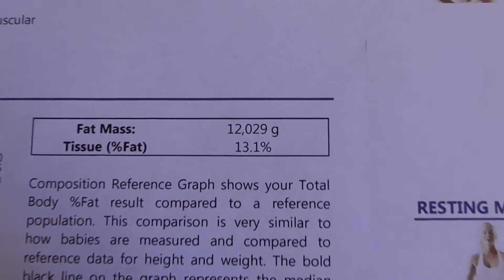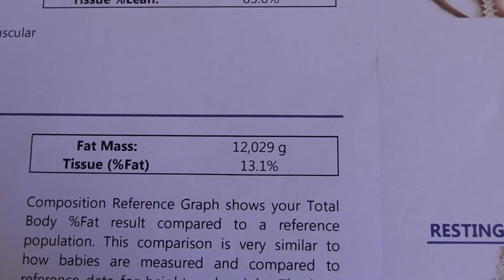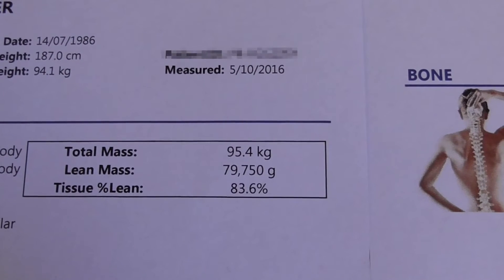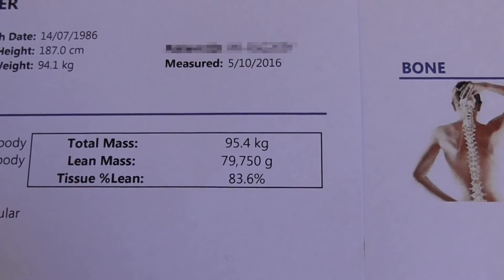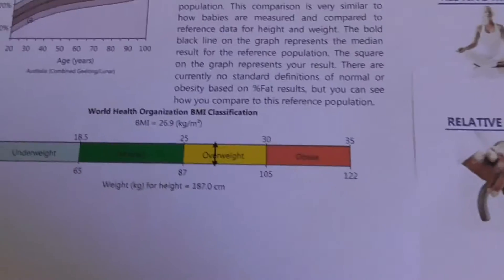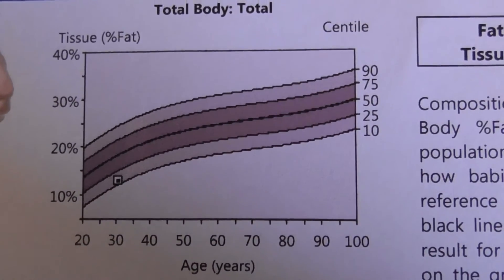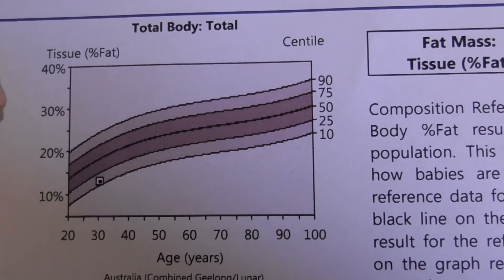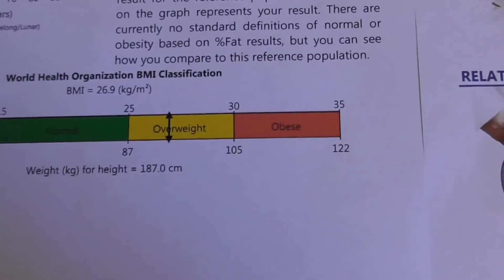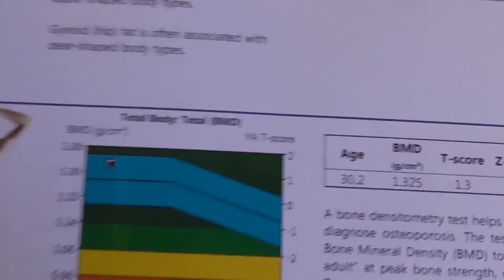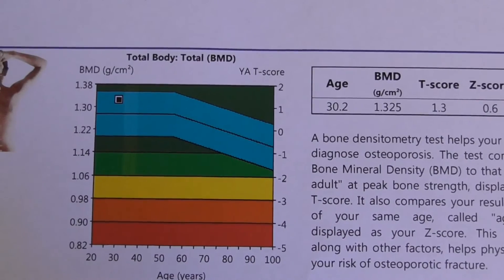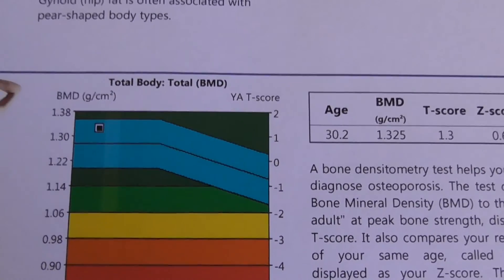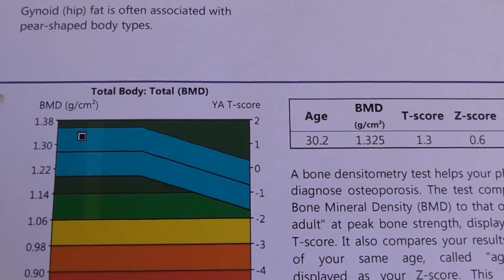I have my results: 13.1% fat, a bit over 12 kilograms of fat mass, and 79.75 kilograms of lean mass. For my age and height, it puts me on the lower percentile — below average body fat. BMI, which is still useless, has me well into the overweight category. Another cool thing about DEXA is it gives you your bone mineral density, which mine is well above average. Osteoporosis would be down in the red, whereas green would be average — I'm well into the above average range, which is really good.